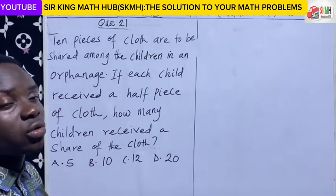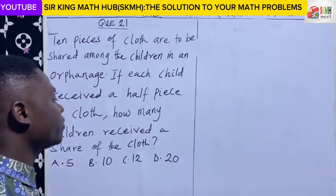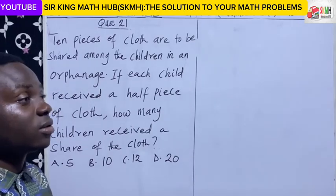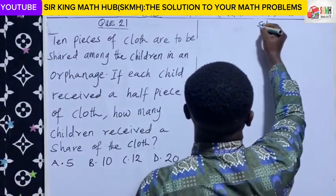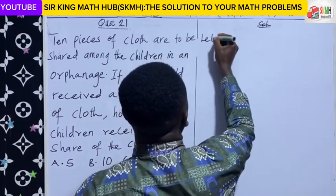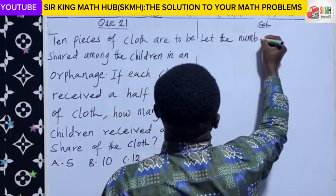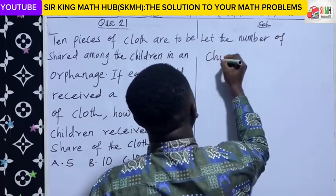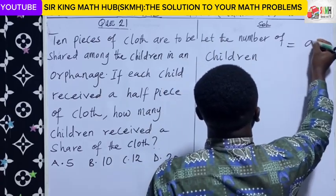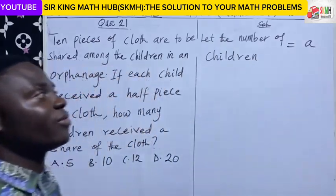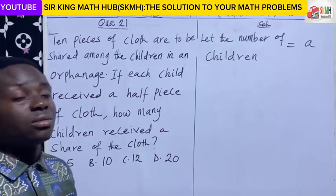Since we don't know the exact number, let's represent the number of children who received a share of the cloth with a variable. We have represented the number of children in the orphanage as E.